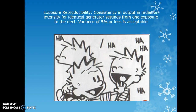Exposure reproducibility refers to consistency and output of radiation intensity for identical generator settings from one exposure to the next. A variance of 5% or less is acceptable. For example, if you shoot a chest x-ray at 125 kVp and 3.2 mAs and then repeat it, the second image shouldn't differ significantly. If one image is very light and another very dark, reproducibility is outside that 5% threshold.